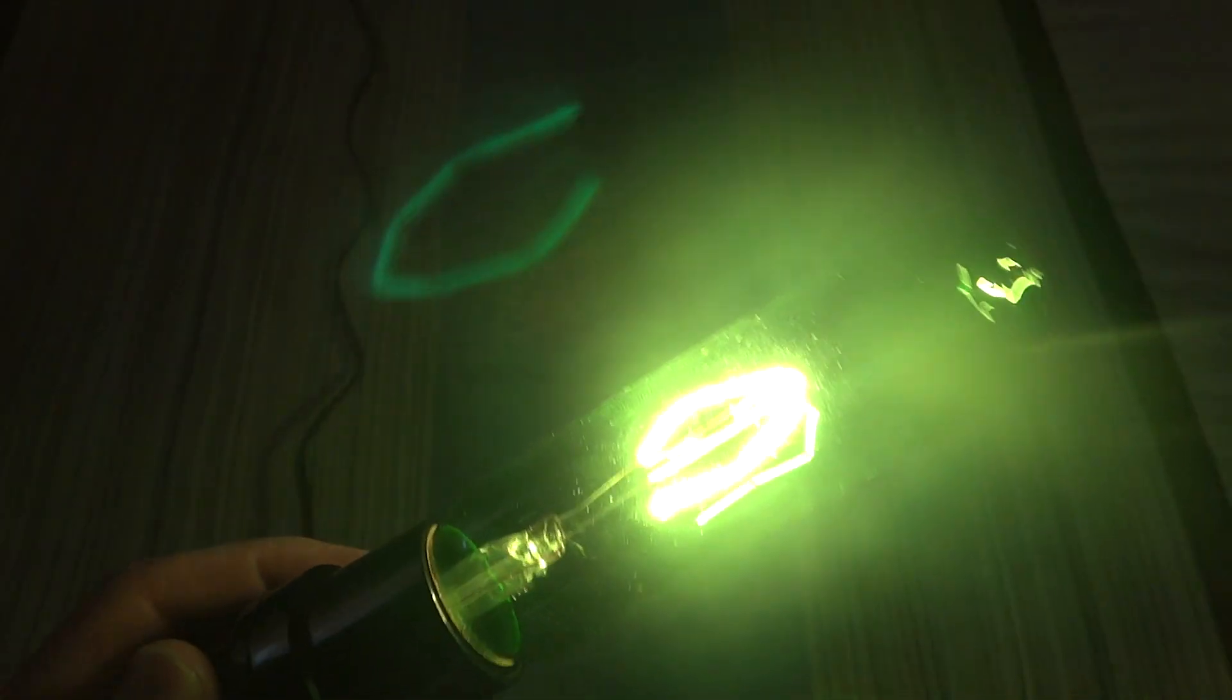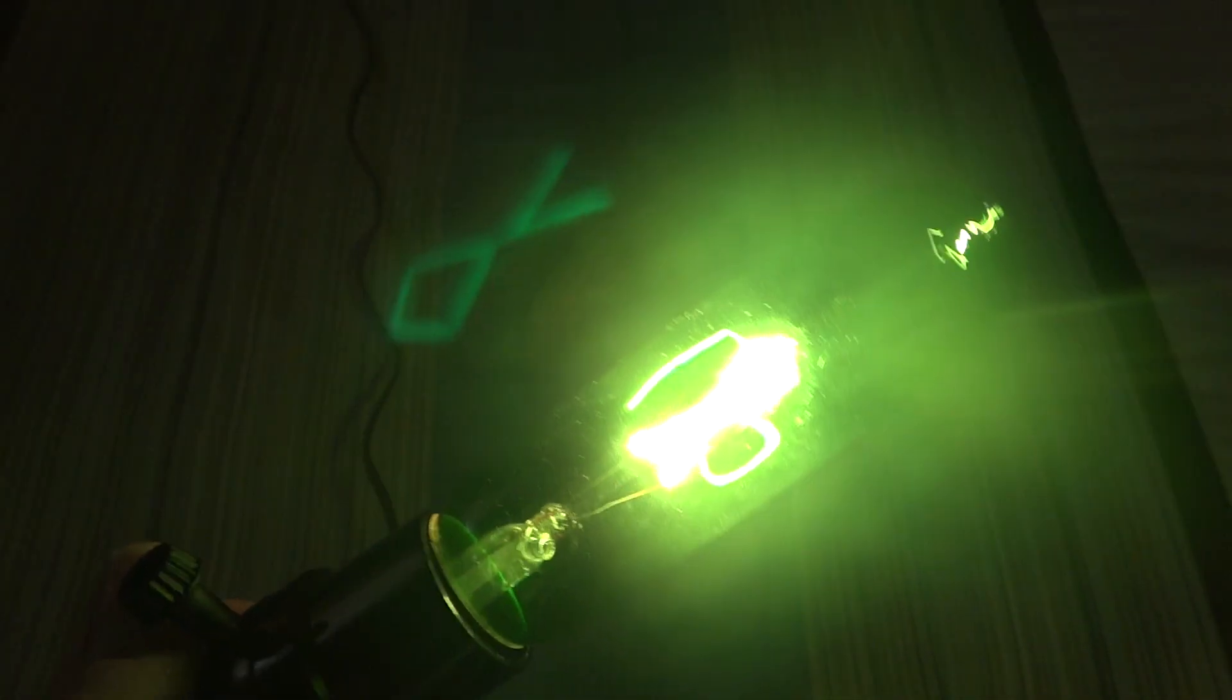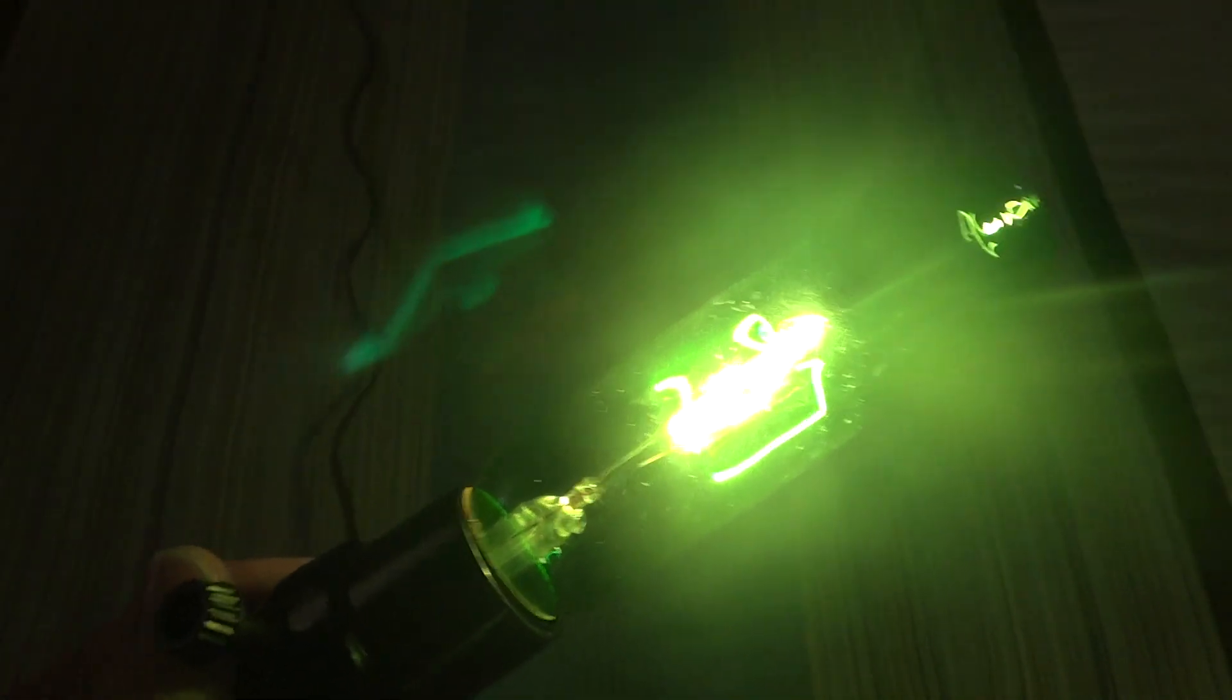And you can see in the camera the filament structure. I don't know why this camera does that. It's probably because there's a piece of glass in front of the lens or whatever. So it just bounces around in there.